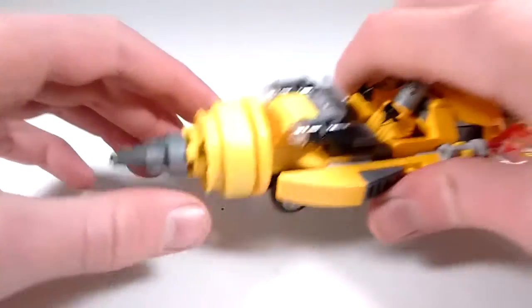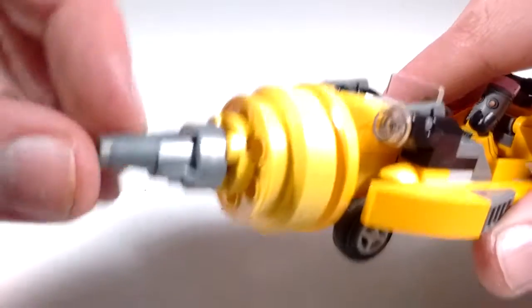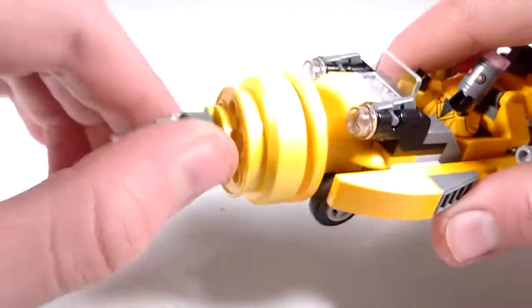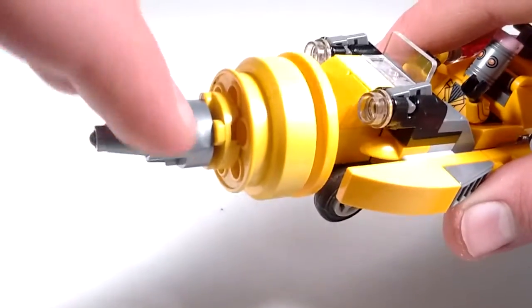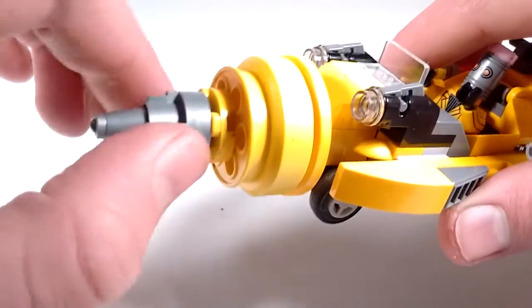Alright, so starting off here at the tip of the pencil, I just have a bit of silver there. So, with like the tip of the pencil, I think that looks really good. And I'm not quite sure what this piece is called, but I think that looks great.